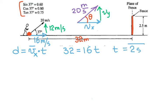That was the first question: how long it takes for the ball to reach the fence, which is 2 seconds. For the next question, they ask whether the ball will hit the fence, and if so, how far below or above the top of the fence will it be when it reaches the fence.